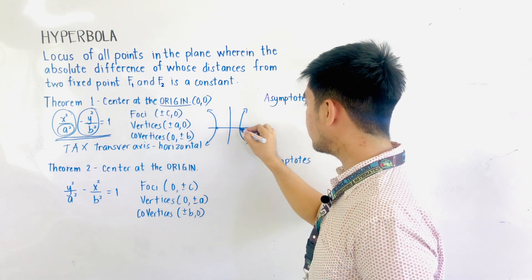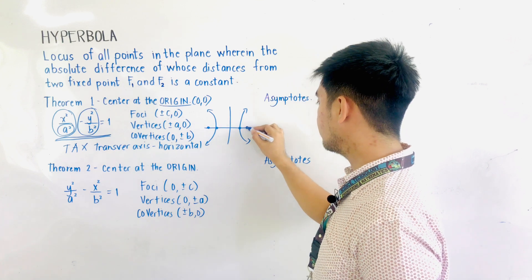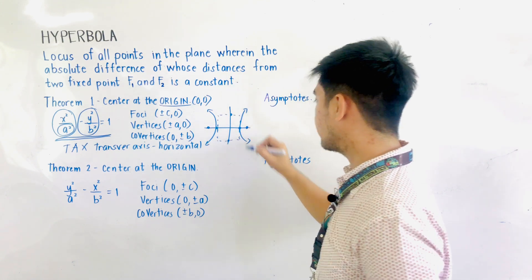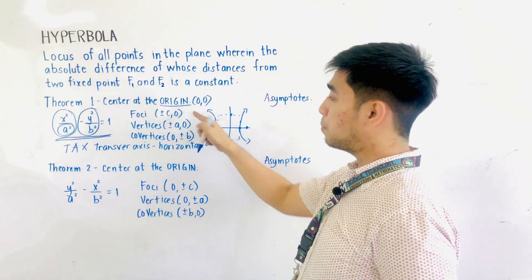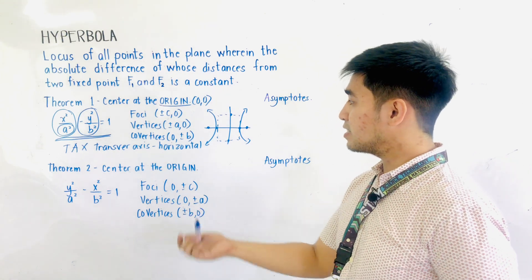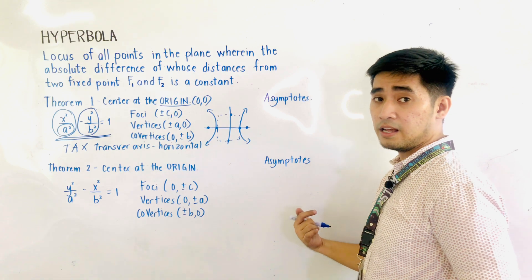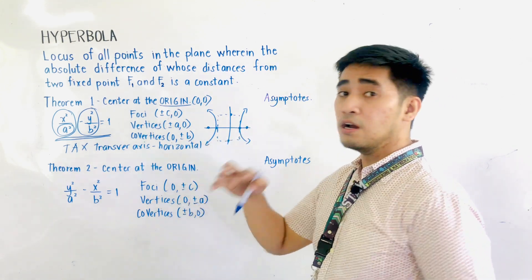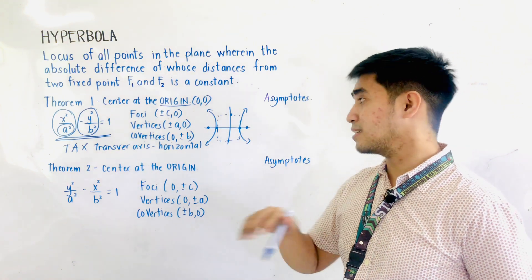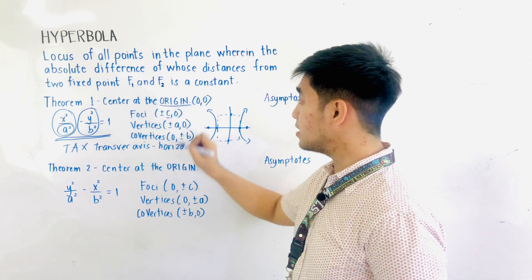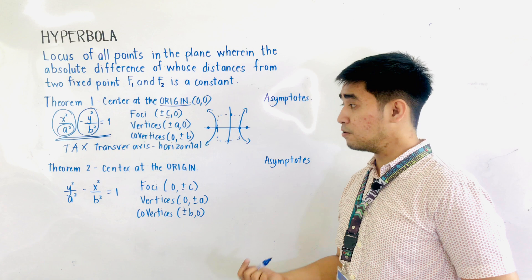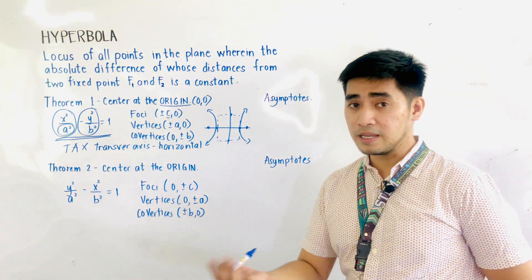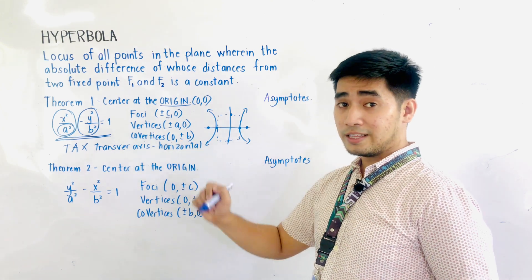If that is a hyperbola, this will be our vertices, this will be our foci, this will be our co-vertices, and this will be the auxiliary rectangle, wherein the center is located at the origin. So, these are the coordinates of the foci, the vertices, and the co-vertices. If we have transverse axis horizontal, we are changing the value of x. So we can find the foci and the vertices on the x-axis. Foci: (±c, 0). Vertices: (±a, 0). Co-vertices: (0, ±b), since the conjugate axis is the y-axis.